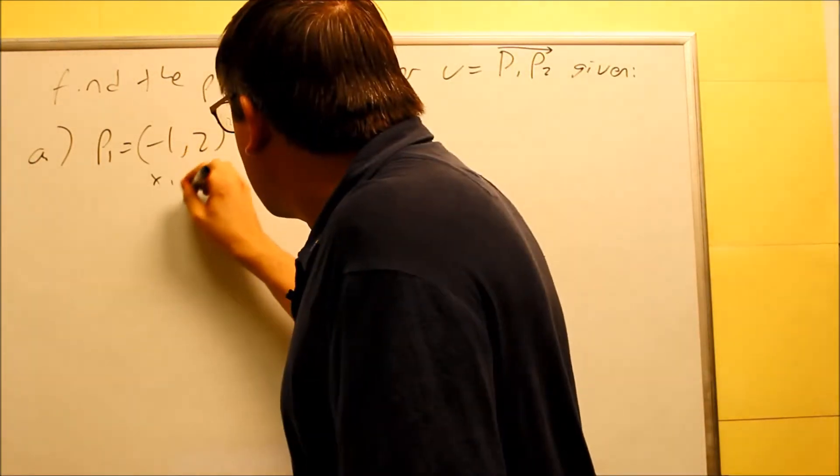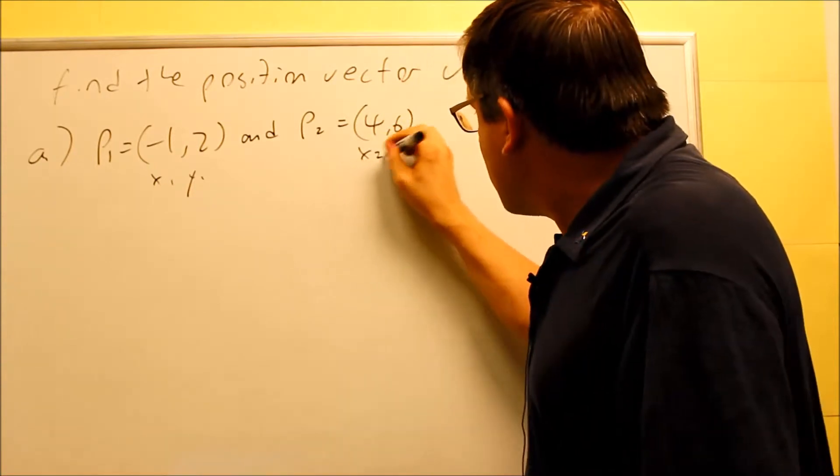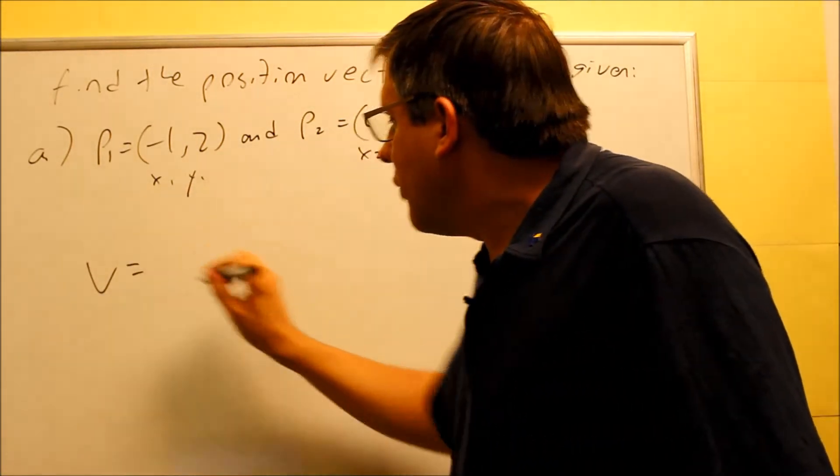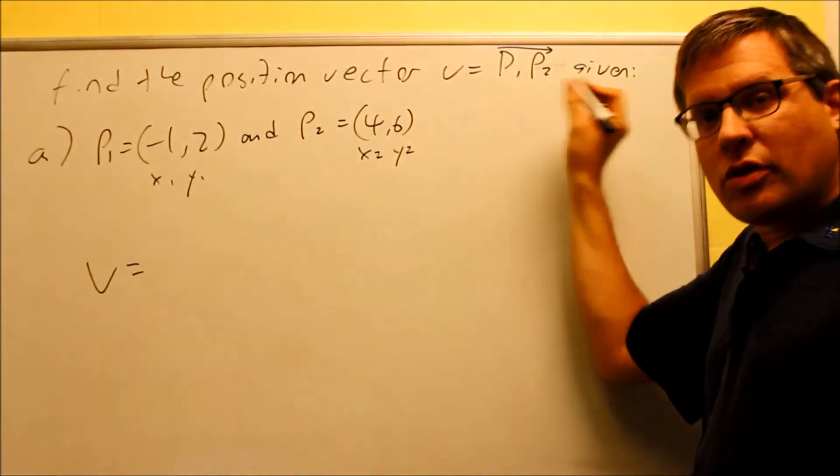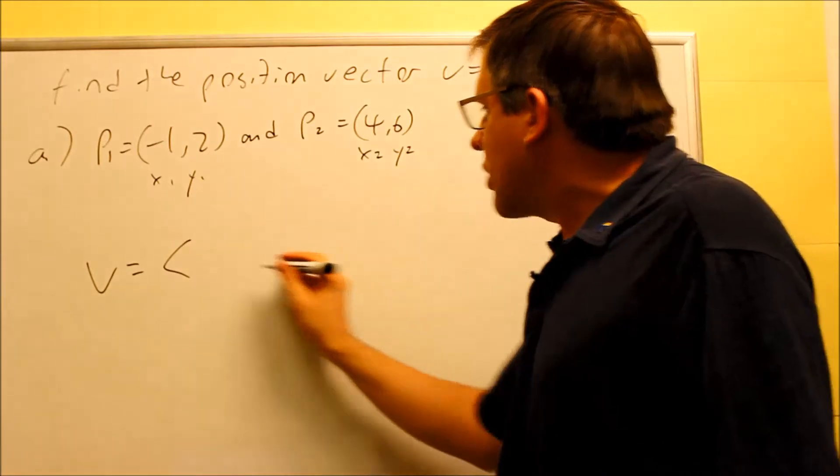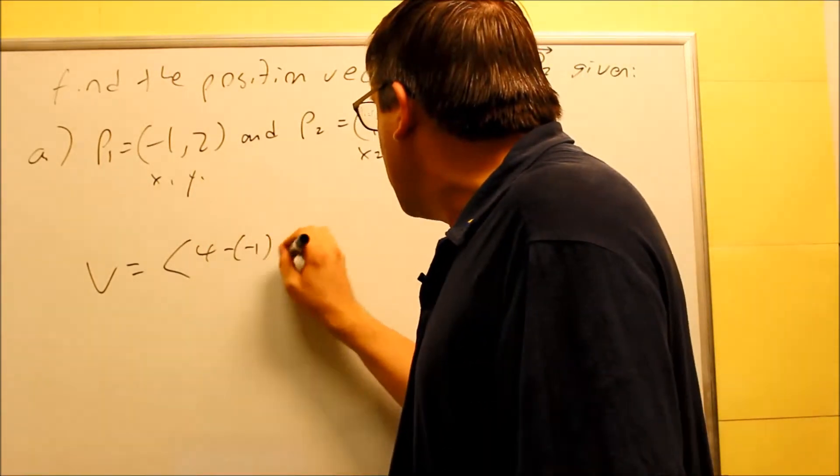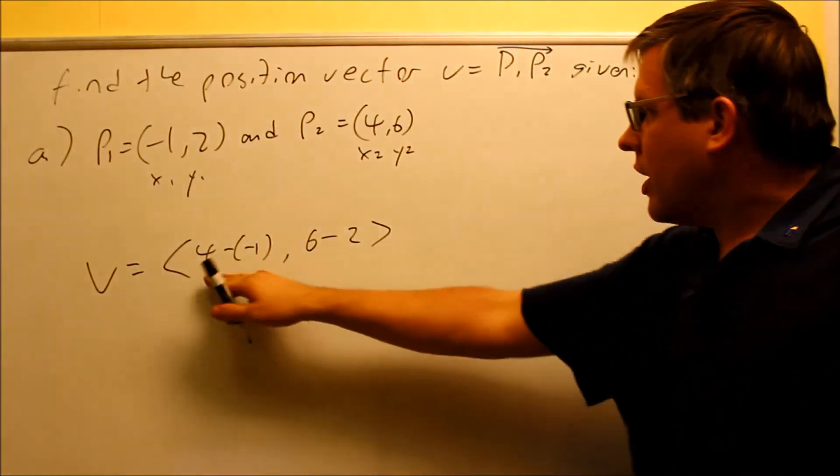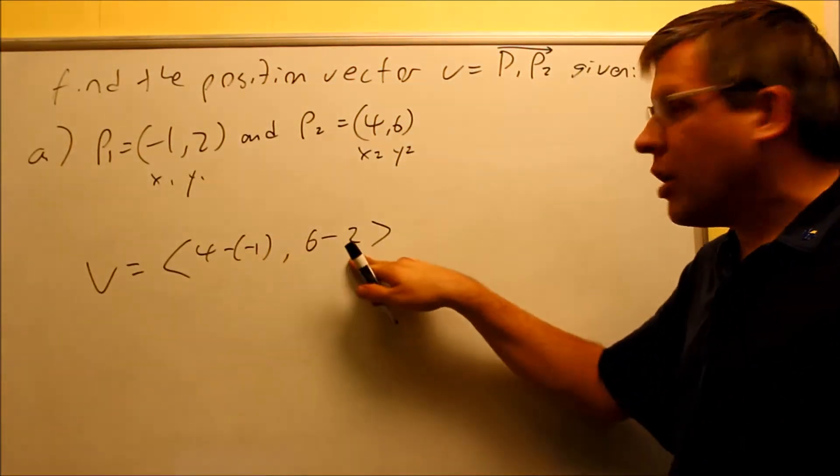The first point, this is always going to be X1, Y1. Second point is X2 and Y2. So when we want to form the V from P1 to P2, there's a formula for that. We just talked about that before. It's X2 minus X1, 4 minus negative 1. And we have 6 minus 2.